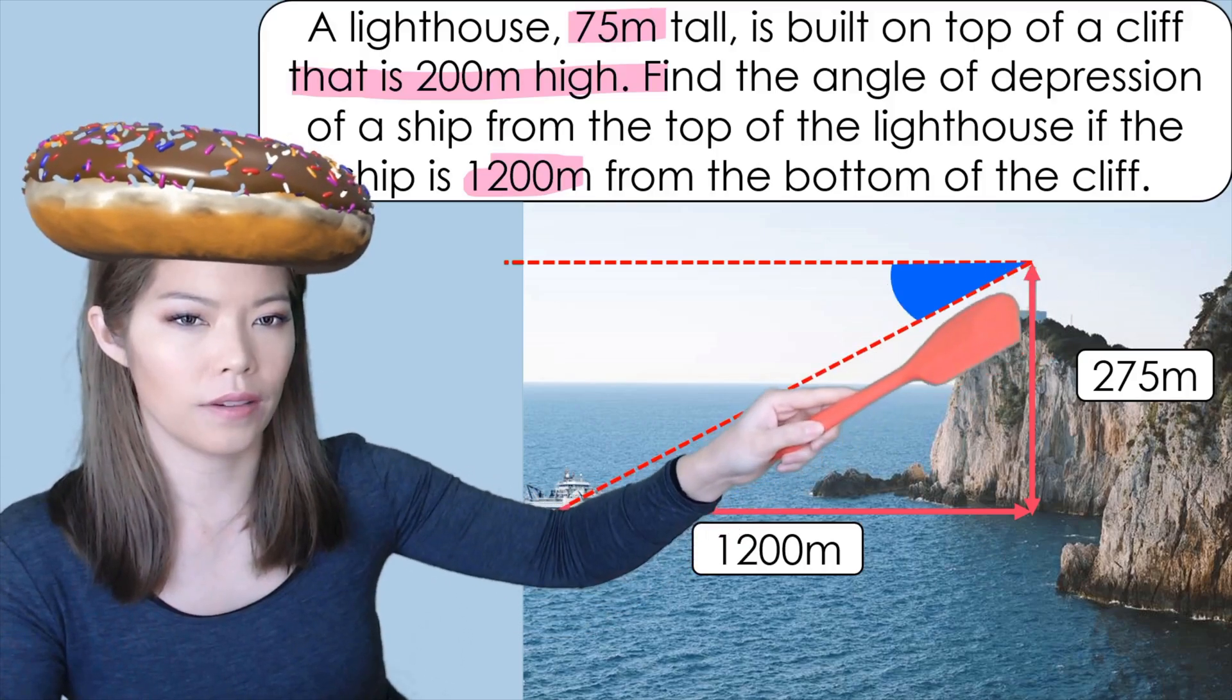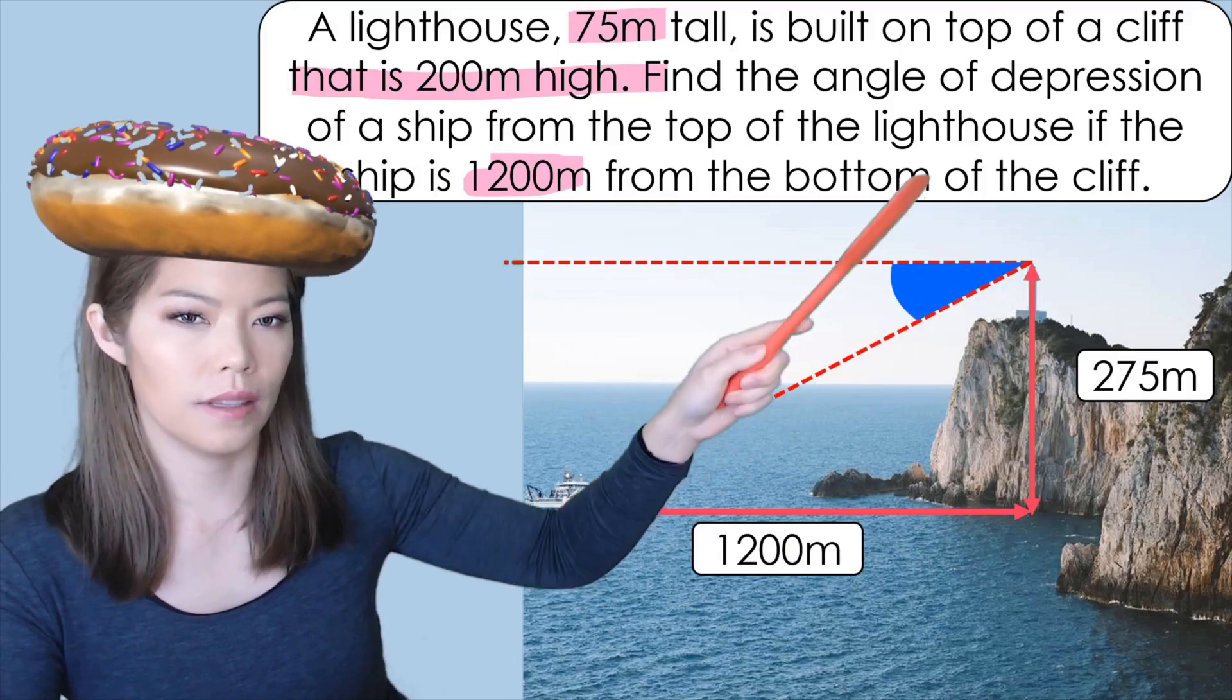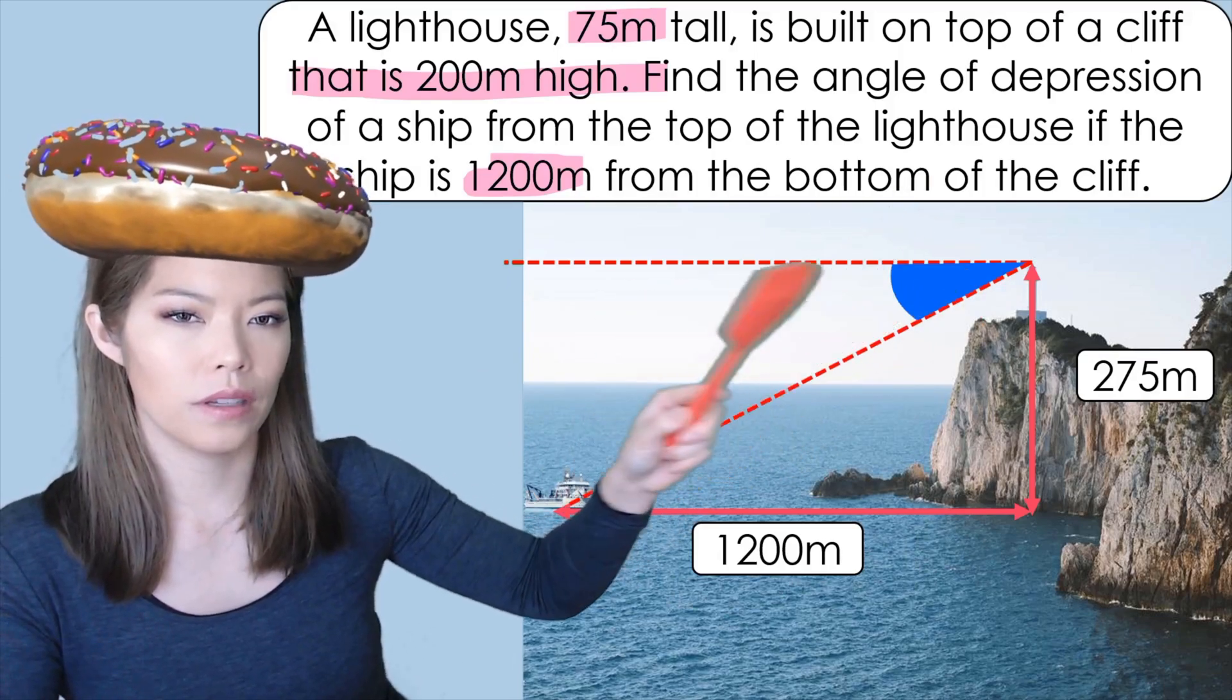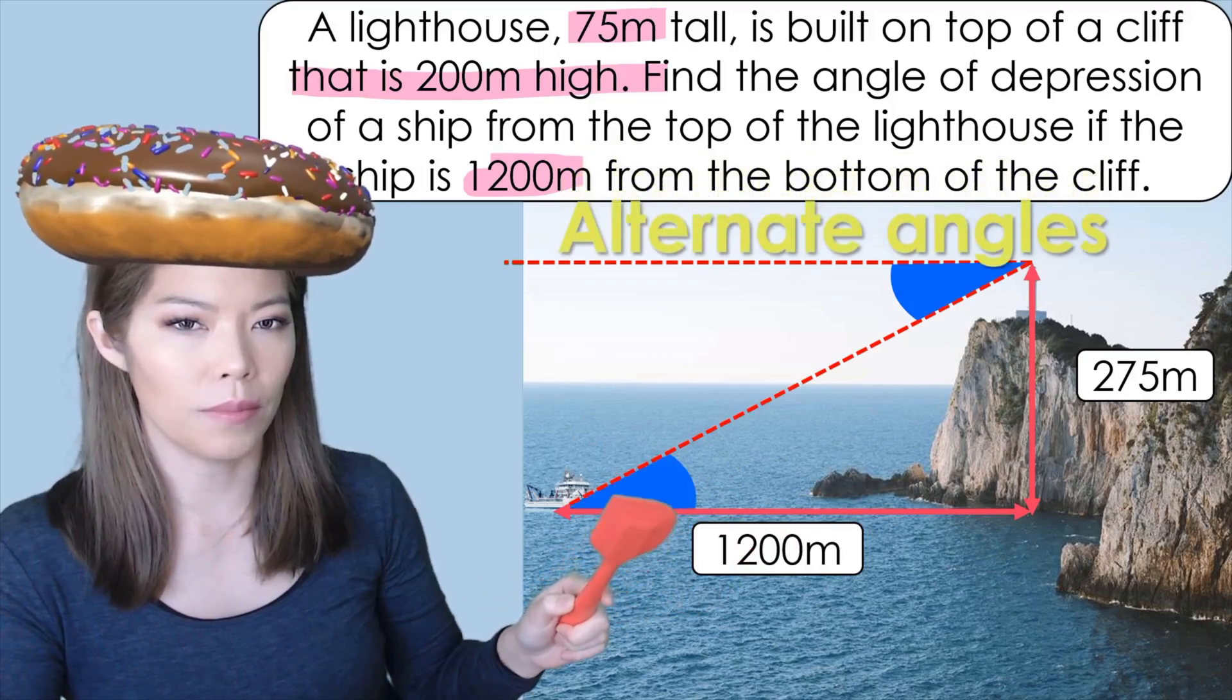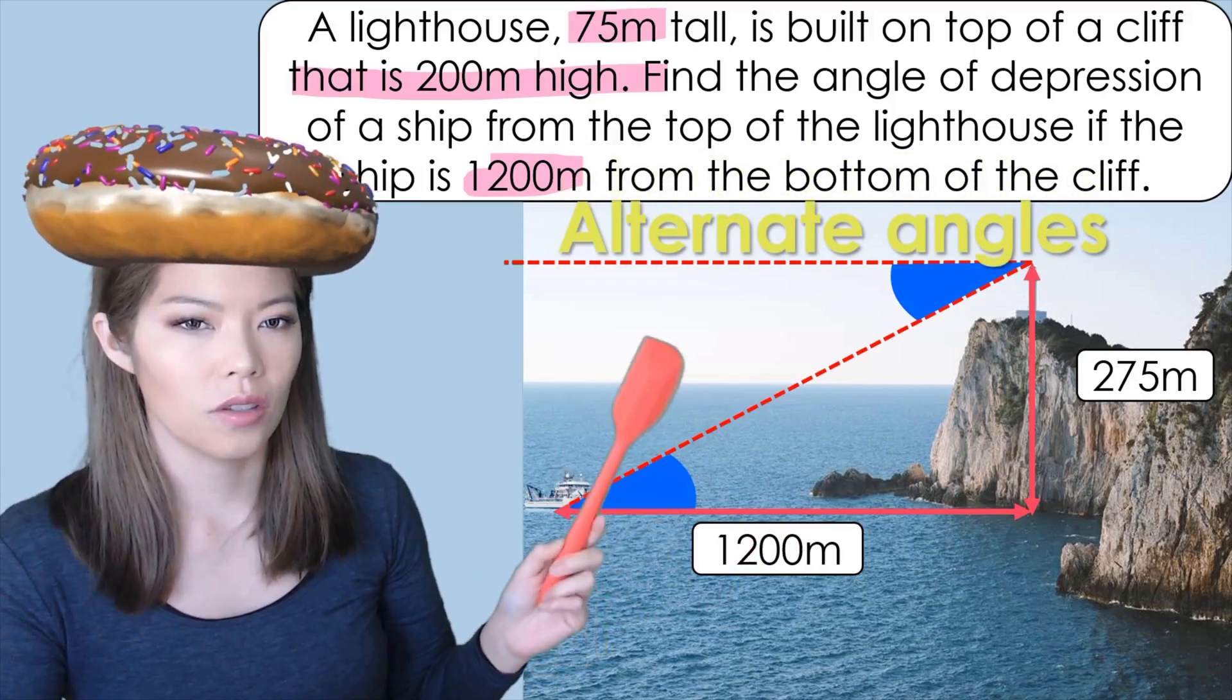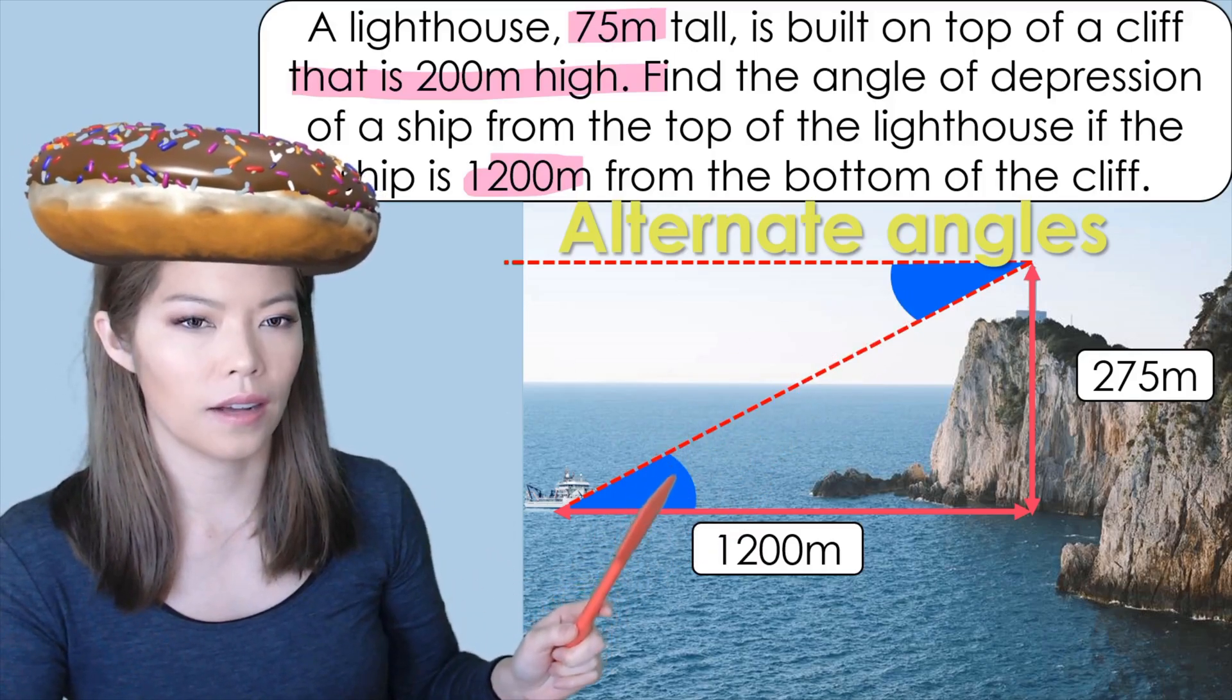Remember the angle of depression is from a horizontal line so we must draw a horizontal line. Depression means going down. So it'll be this angle here. Never that little angle in the corner because that's with the vertical. Always with a horizontal line. Now we notice that this angle because these two lines are parallel is the same as this angle over here because they're alternate angles. So essentially we're looking for that angle but we can calculate using this angle.